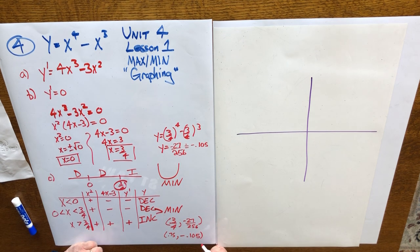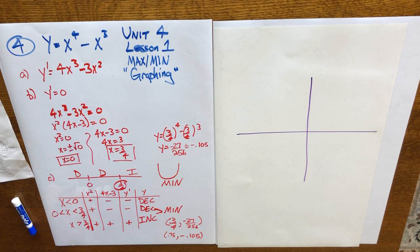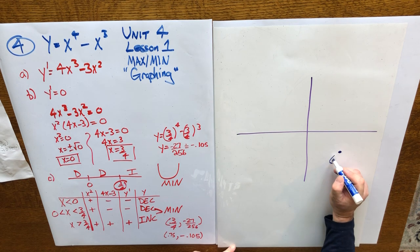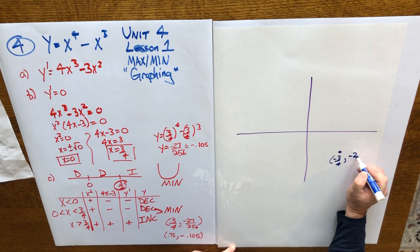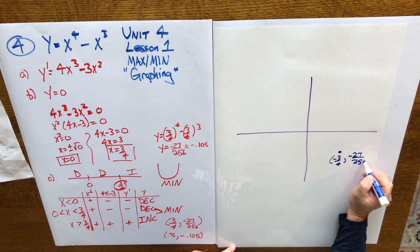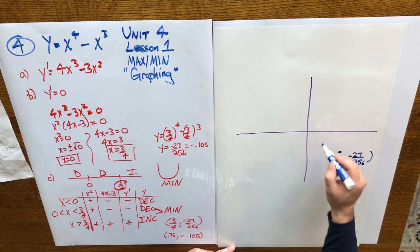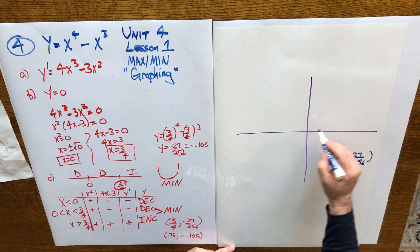So we only have one value from this chart, one minimum value produced. So we'll take a look over here at plotting it on our x and y axis. We imagine this point right here, 3 quarters comma negative 27 over 256. That's a minimum value. The function's gone from decreasing on the left side to increasing on the right.